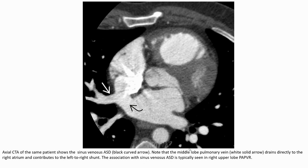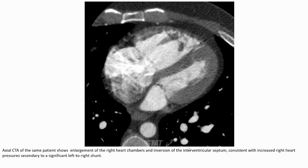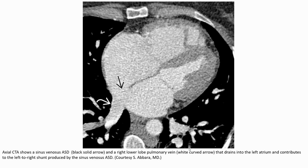The association with sinus venosus ASD is typically seen in the right upper lobe PAPVR. Axial CTA shows enlarged right heart chambers and inversion of the interventricular septum, consistent with increased right heart pressure secondary to a significant left-to-right shunt. Another axial CTA shows sinus venosus ASD and a right lower lobe pulmonary vein draining into the left atrium, contributing to the left-to-right shunt produced by the sinus venosus ASD.